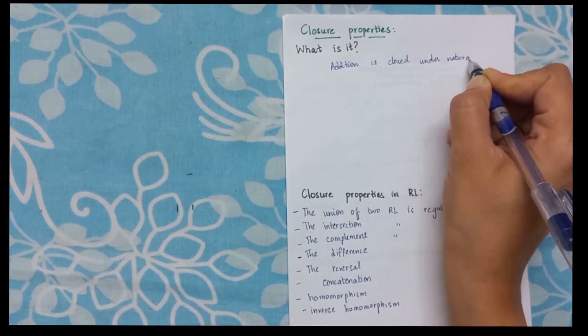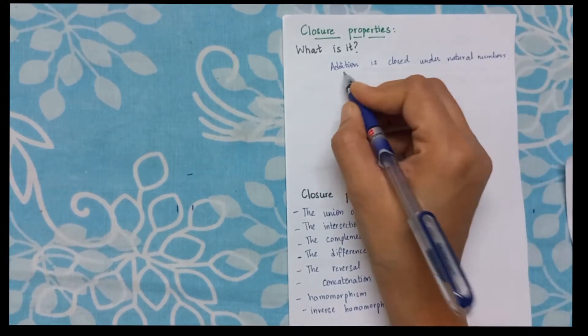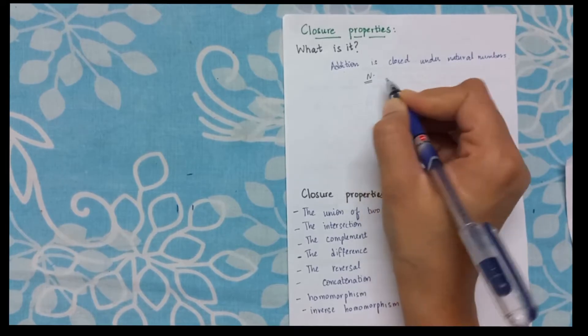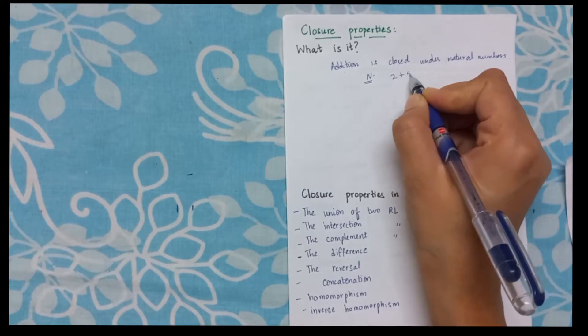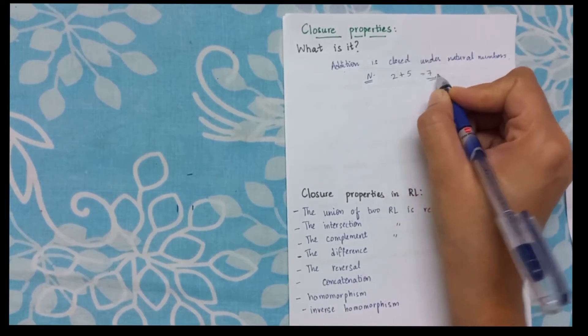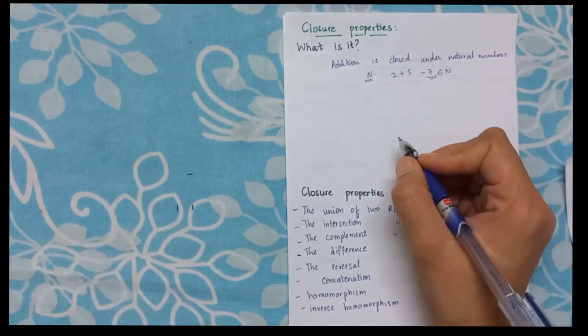Now I know that the natural numbers begin from 1. So if I take any number from the set of natural numbers, let's take 2 and 5. It again gives me 7 which is again belonging to the set of natural numbers.